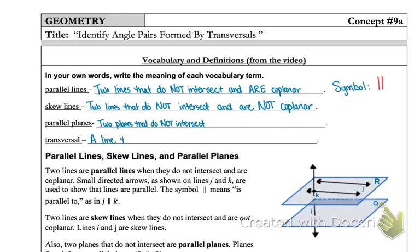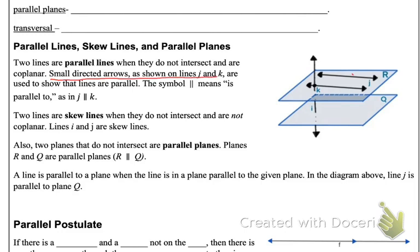And lastly, a transversal is just a line that intersects two or more lines. So when we have our parallel lines on a plane, we're going to use the red arrows that are shown over in the picture to show that those lines are parallel, meaning they're never going to intersect.